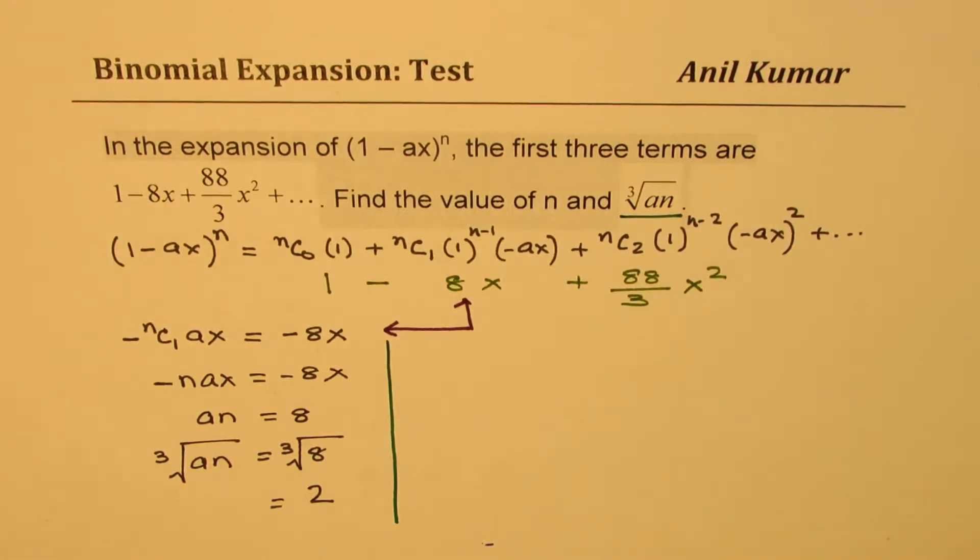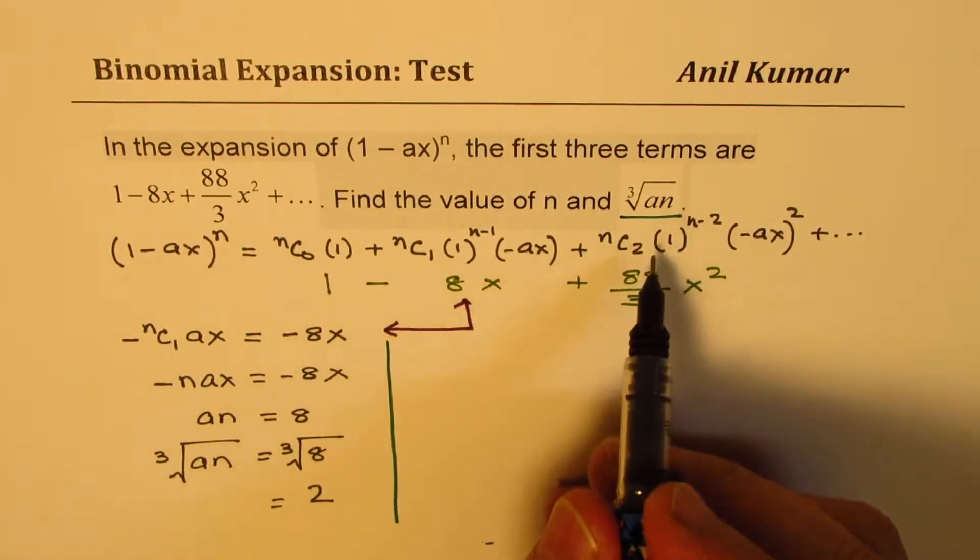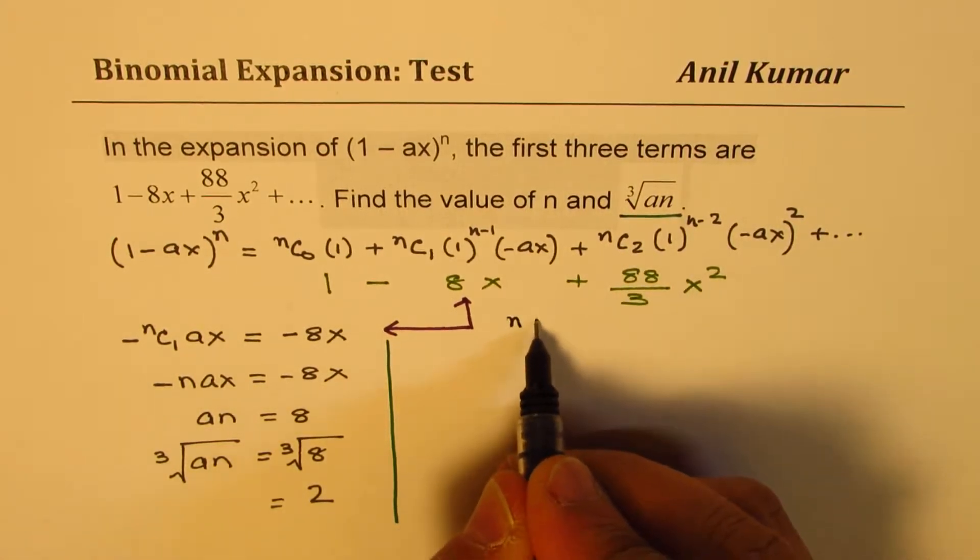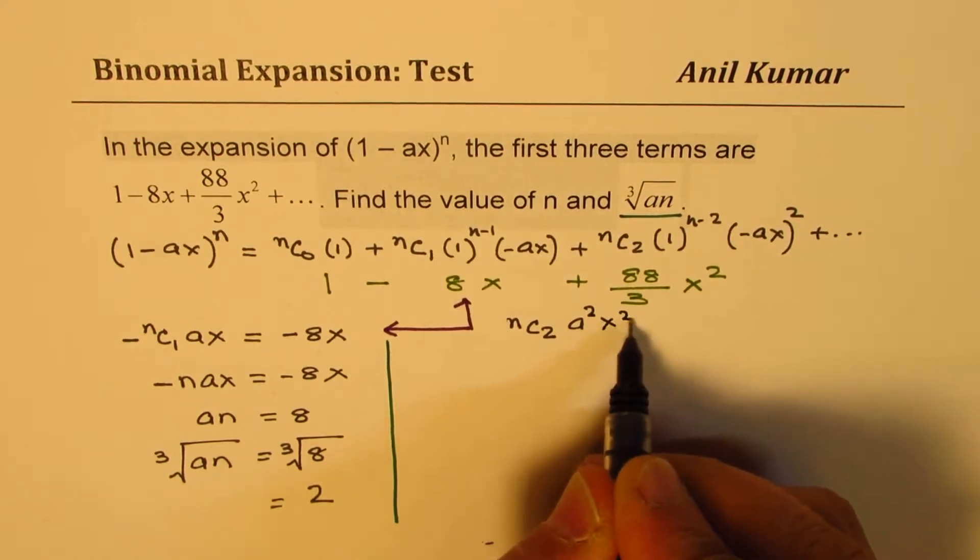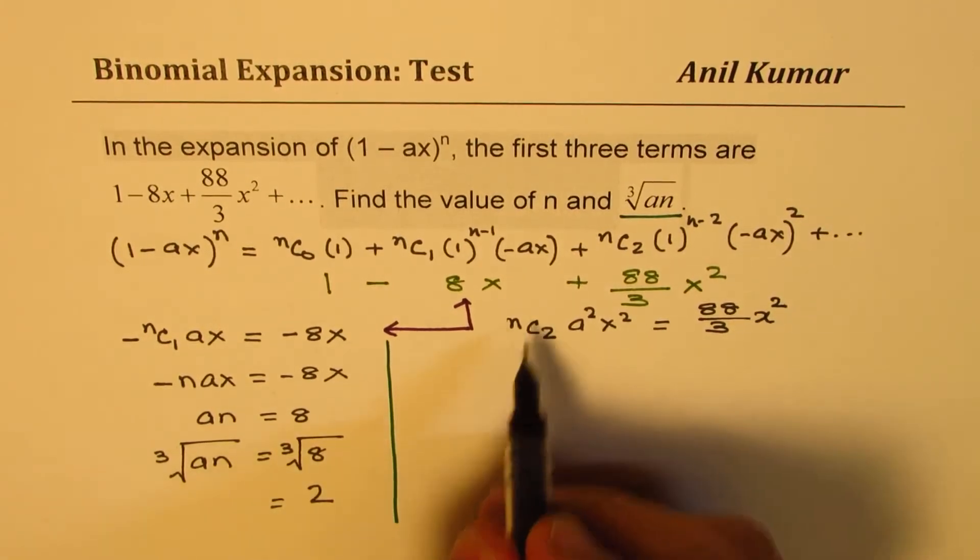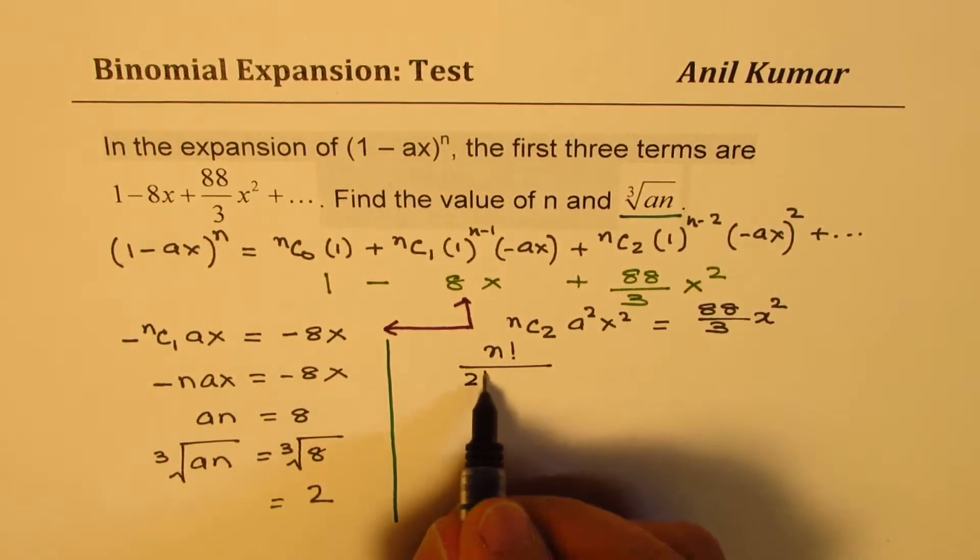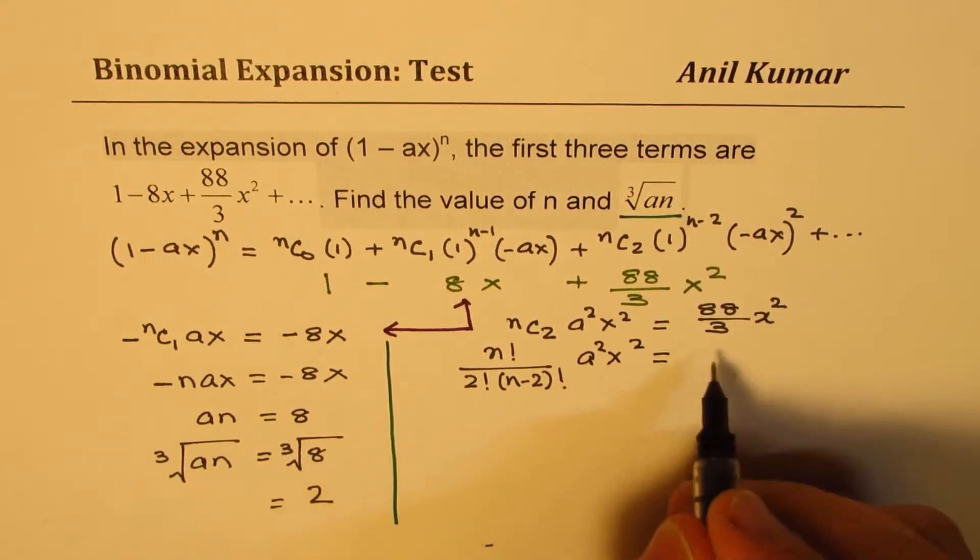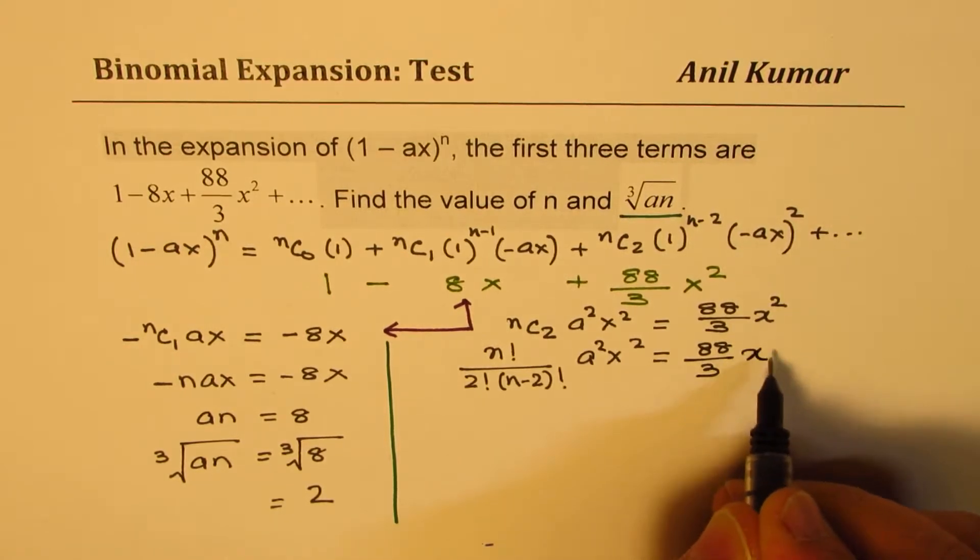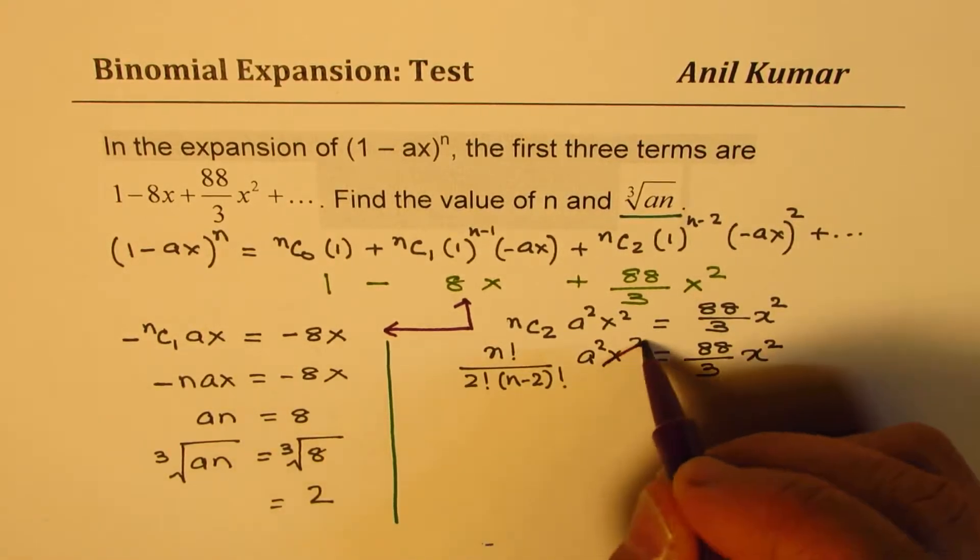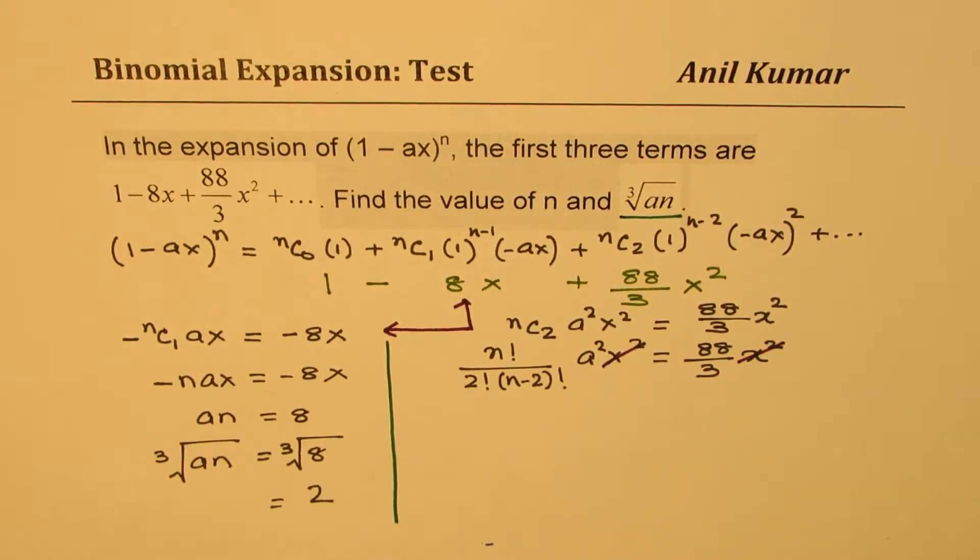Now let's look into the second part. nC2, 1 to any power is 1, and that makes it positive. So we get nC2·A²x² = (88/3)x². Now, nC2 is n! / (2! × (n-2)!), times A², times x², equals (88/3)x².